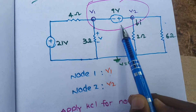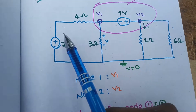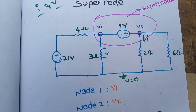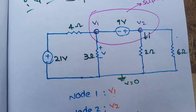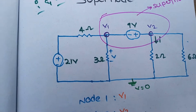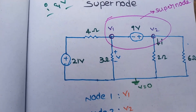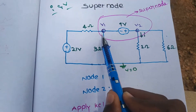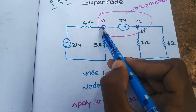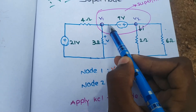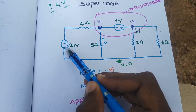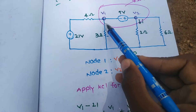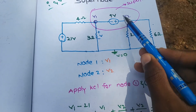This is the first line: Node 1 plus Node 2. We can write KCL for Node 1 and KCL for Node 2. This is the incoming current, and there are 3 outgoings. That means V1 minus 21 by 4, V1 by 3, and this is V1 minus V2 times 9.